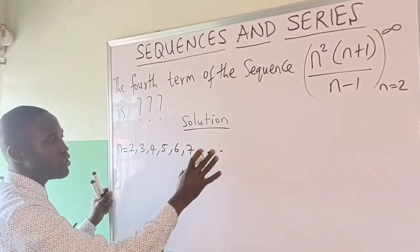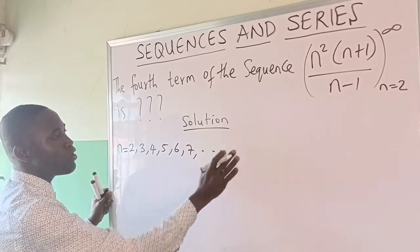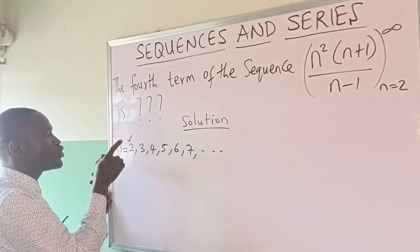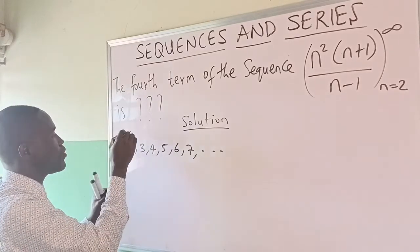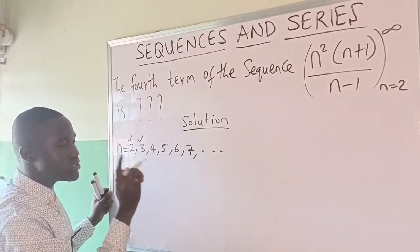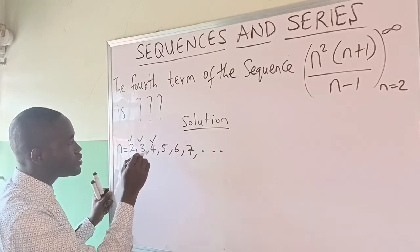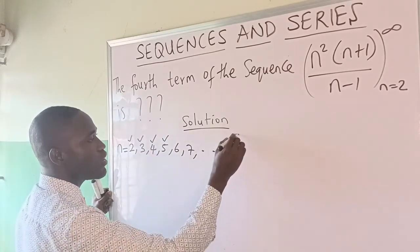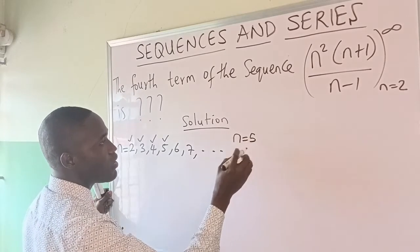I will stop here. Now the fourth step means when n equals 2 that is the first step. N equals 3 is the second step, third step, fourth step. That is the value of n equals 5. So n=5 is your fourth step.